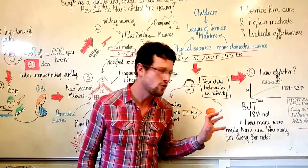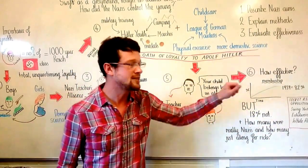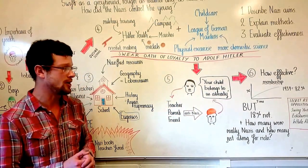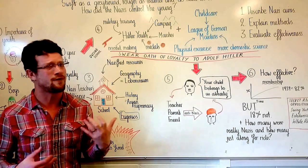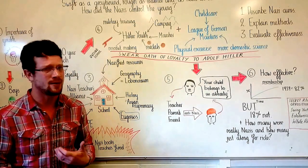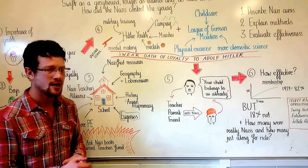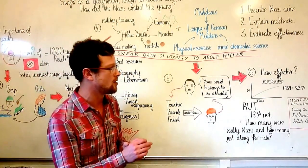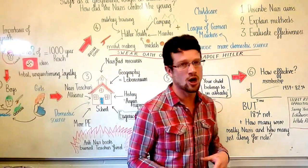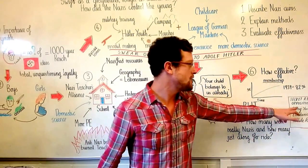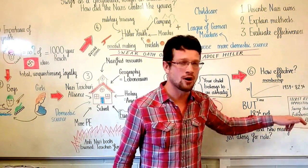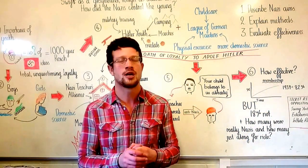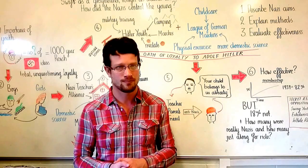But let's remember, that still leaves 18% of young people not a member at all. And it's impossible for us to know how many of the 82% were really loyal Nazis and how many of them just joined because it was a fun ride or also because they knew if they failed to do so they were likely to make trouble for their families. It's also important to know, although it is outside the remit of this video, that there was secret opposition to Nazi youth. The Swing Youth, the Edelweiss Pirates, and the White Rose are all examples of youth movements that were directly opposed to the Nazi ones.